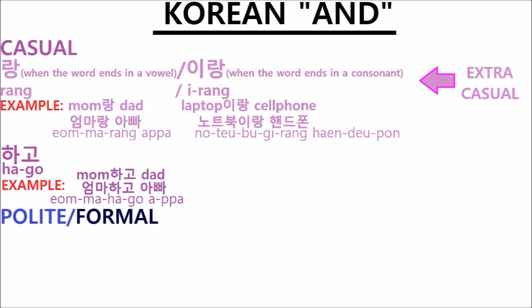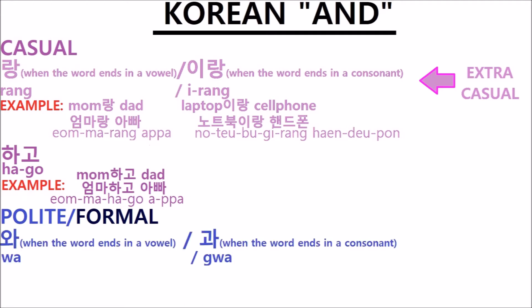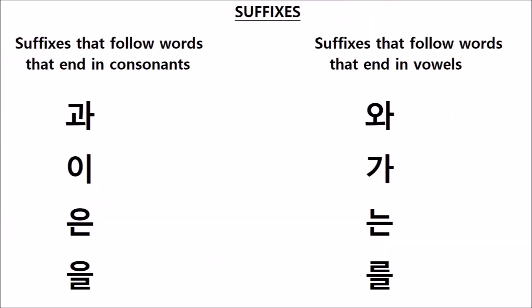Now, the formal/polite version is not really all that formal, but it's the most respectful one we've got. It is 와 (wa) when the previous word ends in a vowel, and 과 (gwa) when the previous word ends in a consonant. This can be a little tricky to remember, because here you have a noun that ends in a consonant and a suffix that begins in a consonant — this is different from a lot of the suffixes we've seen so far. So be very careful not to get your 와 and your 과 mixed up.